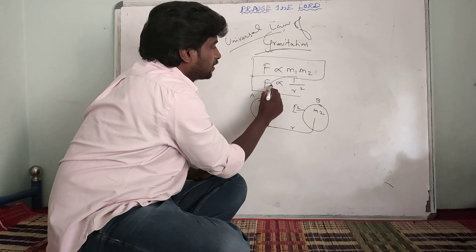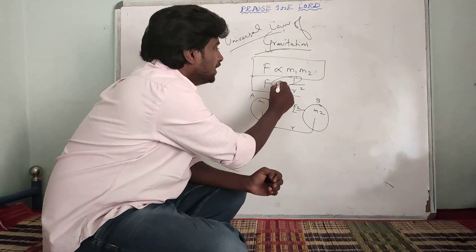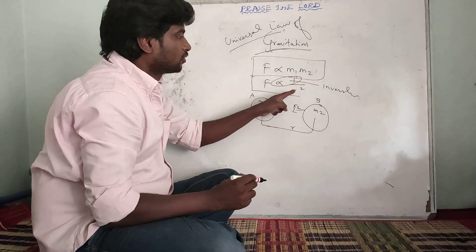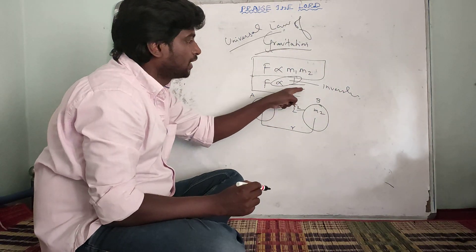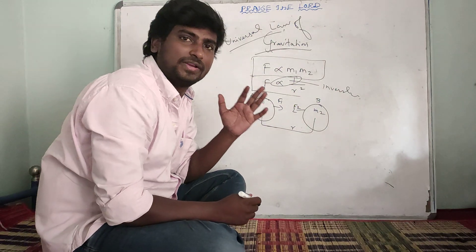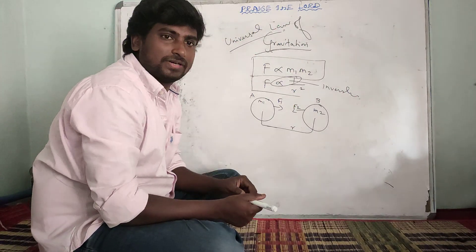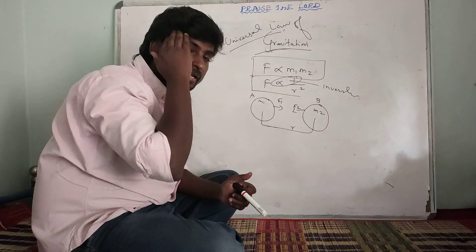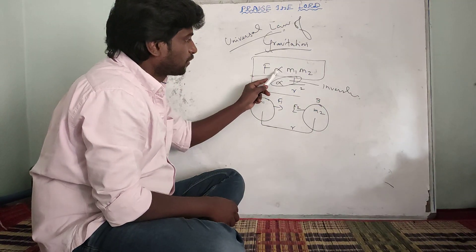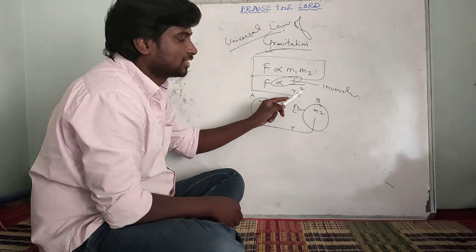The force is inversely proportional to the square of the distance R — that is, 1 over R squared. This is a very, very important question worth two marks. Every particle in the universe attracts every other particle with a force directly proportional to the product of the masses and inversely proportional to the square of the distance between them.